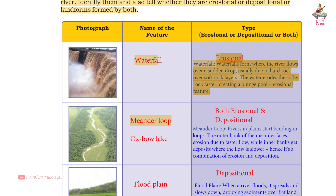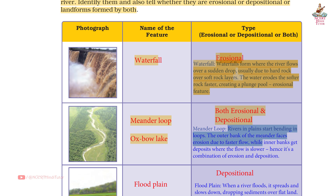Second photograph — Meander loop. Type: Both erosional and depositional. Rivers in plains start bending in loops. The outer banks of the meander face erosion due to faster flow, while the inner banks receive deposits where the flow is slower. Hence, it is a combination of erosion and deposition.